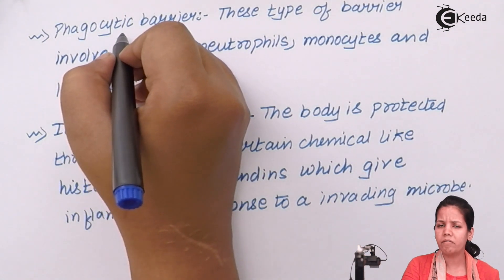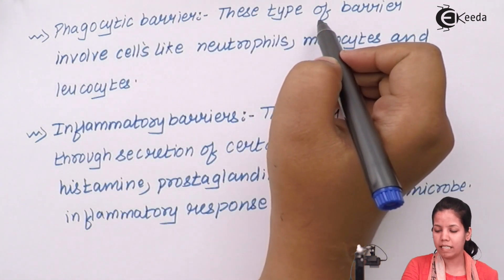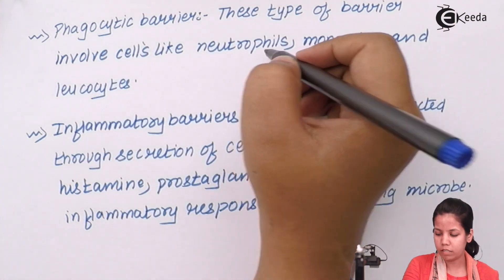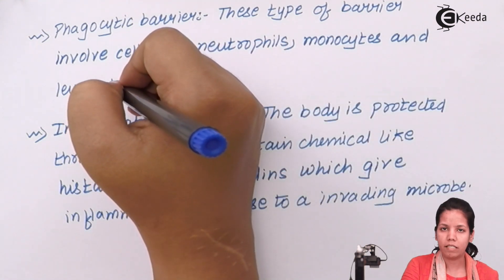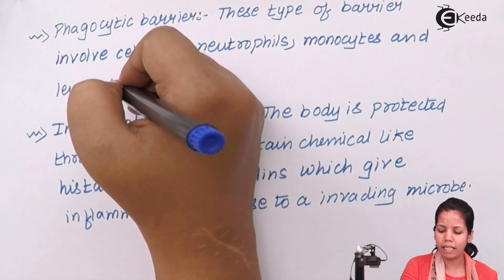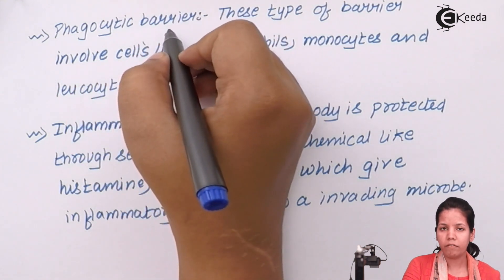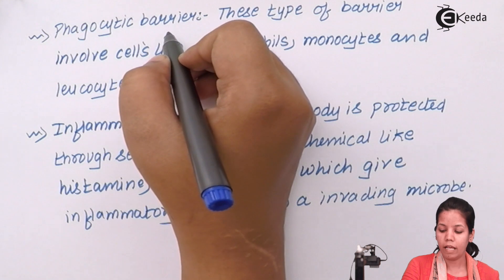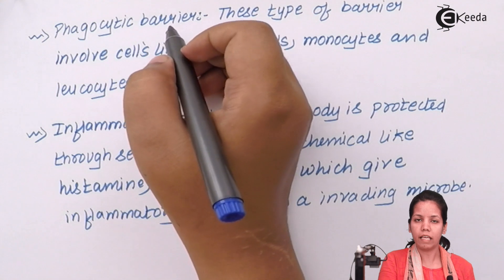Phagocytic barriers involve your neutrophils, monocytes, and leukocytes. They are types of white blood cells, and the white blood cell family has different functions in totality. They may stain differently in microscopic pictures, but they have a common function: they engulf certain antigens or microbes that are presented to them.